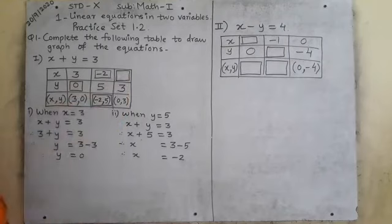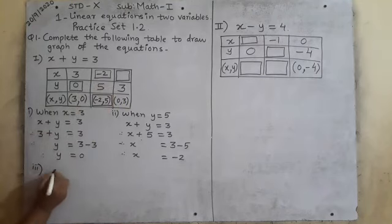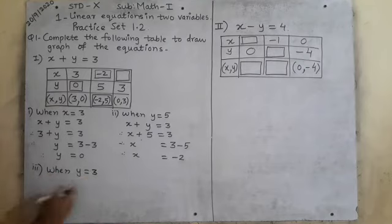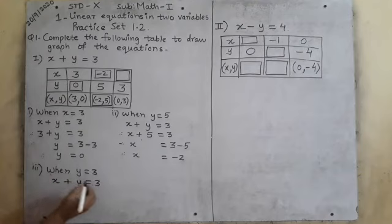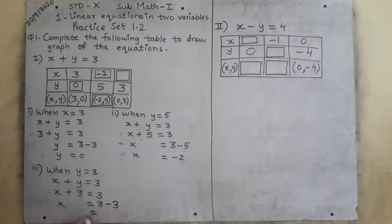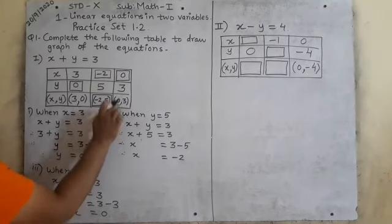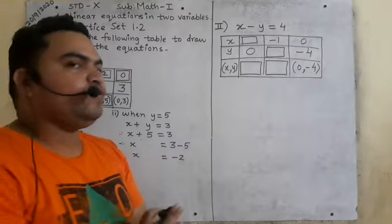For the third column, the y coordinate is given: y equals 3. We have to find x. Using x plus y equals 3, substitute y with 3: x plus 3 equals 3. This 3 goes to the other side: x equals 3 minus 3, so x equals 0. The x coordinate is 0 and y coordinate is 3. This is how we complete the given table — we don't have to draw the graph.